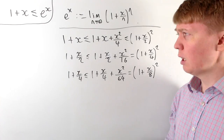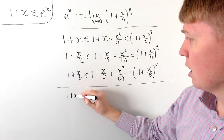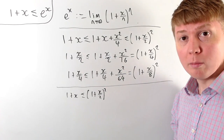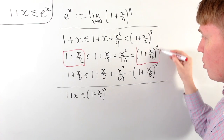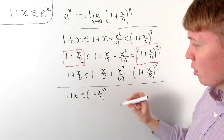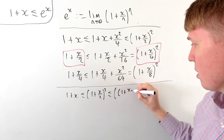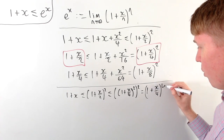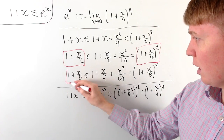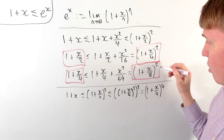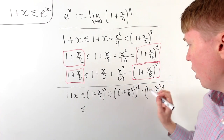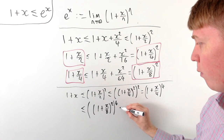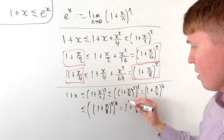Why are we doing this? Starting with 1 plus x, we've shown it is less than or equal to 1 plus x over 2 all squared. But we also have an upper bound on 1 plus x over 2: it is less than or equal to 1 plus x over 4 all squared. So 1 plus x is less than or equal to 1 plus x over 4 all squared, all squared — that is, 1 plus x over 4 raised to the power of 4. We can then apply our upper bound on 1 plus x over 4, which is 1 plus x over 8 all squared, giving us 1 plus x over 8 raised to the power of 8.